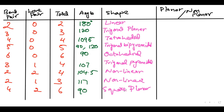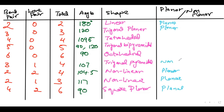With 4 bond pairs and 2 lone pairs, the shape is square planar. Trigonal planar is planar. Trigonal pyramidal is non-planar. Octahedral is non-planar. Tetrahedral is also non-planar.